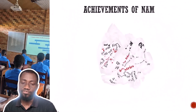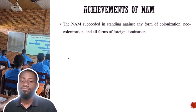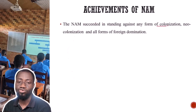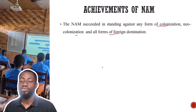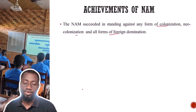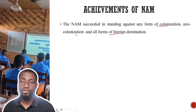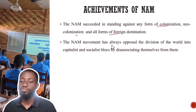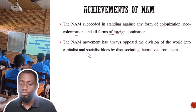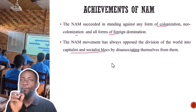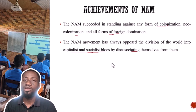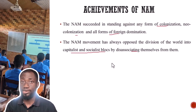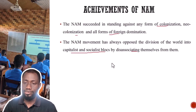Let's take a look at the achievements of the NAM. The NAM succeeded in standing against any form of colonization, neo-colonialism, and foreign domination, and was able to liberate some countries. The NAM has always been opposed to the division of the world into capitalist and socialist blocs by dissociating themselves from both. One achievement is that they have stated to the world that we don't want the world divided into two blocs — we should all come together and work together.